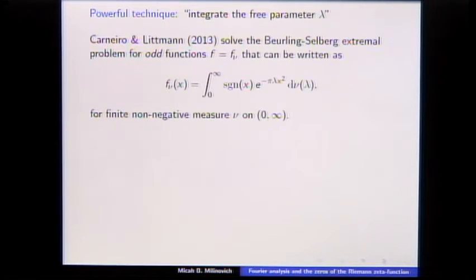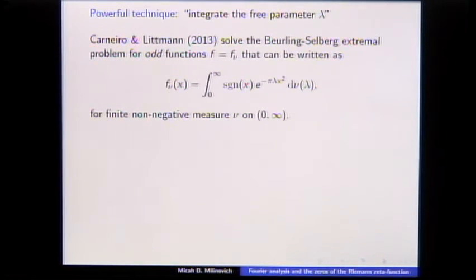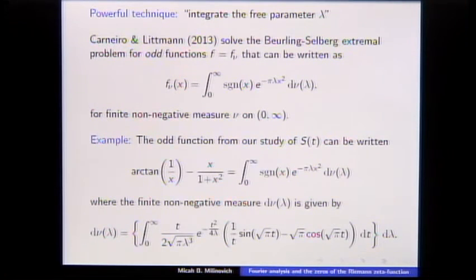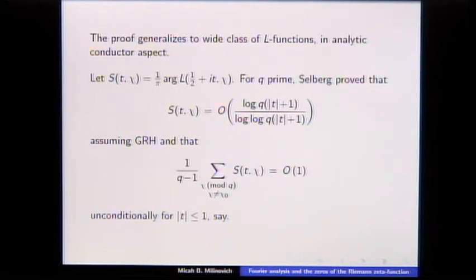Carnero, Lippmann, and Vaaler showed you can solve the Beurling–Selberg extremal problem if you can write your function as an integral kernel times a measure which is finite and non-negative. You still have to work out all the properties of the resulting functions, but you know your solution will be optimal. The arctangent function is odd, so the only choice was to use the Carnero–Lippmann result. The first step in solving this was finding this measure — probably the most obvious choice, but you have to verify it's finite and non-negative.